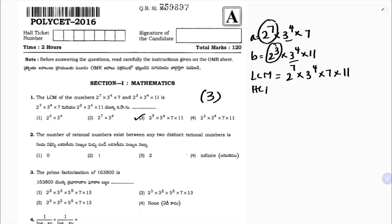They didn't ask HCF here, but if they do, we write only the common elements. So here 2 power 3 and 2 power 7 — the common is 2 power 3 — and 3 power 4. Since 7 and 11 are not common, HCF is 2 power 3 into 3 power 4.